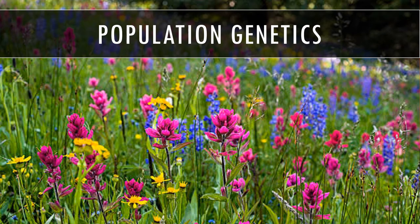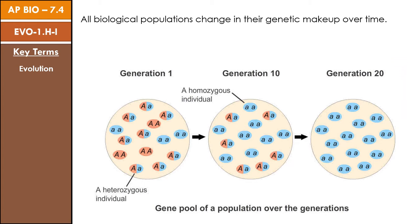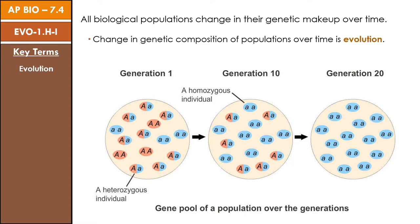Hey guys, in today's video we're going to discuss AP Biology Topic 7.4, Population Genetics. Remember that one of the key ideas for this unit is the idea that all biological populations change in their genetic makeup or allele frequency over time, and we call this change over time evolution.